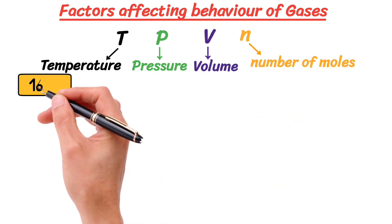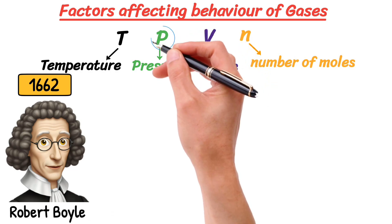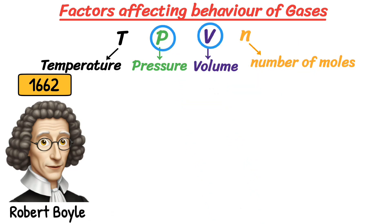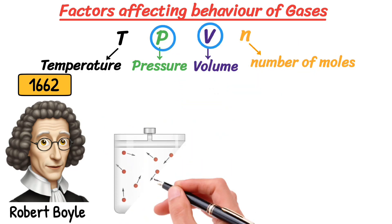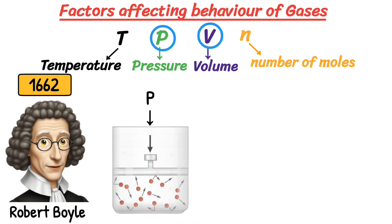In 1662, Robert Boyle studied the relationship between the pressure and volume of a gas at a constant temperature. He observed that if you increase the pressure on a gas, the volume it occupies will decrease. And if you decrease the pressure, the volume will increase.